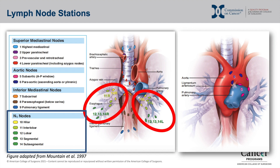It is important to note that nodes assessed via needle biopsy, such as during an endobronchial ultrasound (EBUS), will not count towards the standard and should be removed at the time of surgery for additional confirmation of benign versus malignant pathology. Additionally, nodes sampled via surgical biopsy, such as during mediastinoscopy, must be included in the final pathology report from the curative intent operation in order to count towards the requirement. Surgeons must communicate with their pathologist to ensure these nodes are included on the final pathology report.